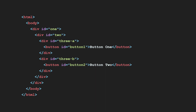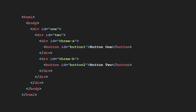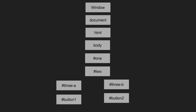Here we have a simple HTML structure: a body containing a div with id=1, inside that a div with id=2, and inside that two children — id=3a and id=3b — which are siblings to each other. Inside 3a we have button one and button two. If you want to see this as a DOM tree structure, the window is the root, then document, then html, body, div#1, div#2, and then 3a and 3b with their buttons.